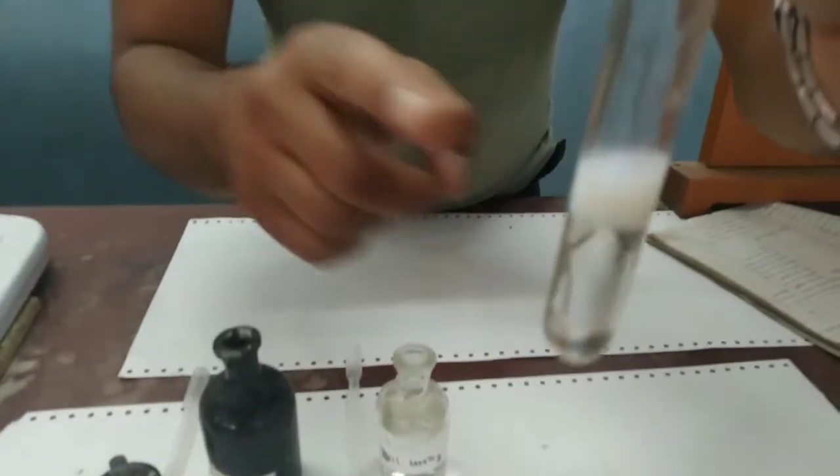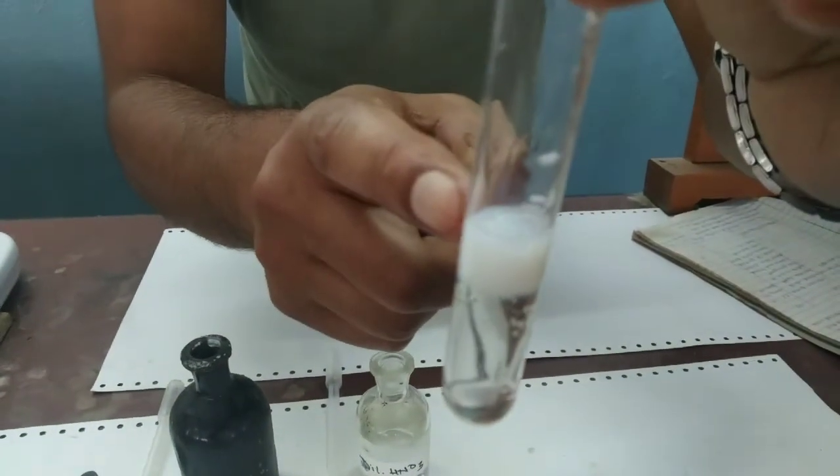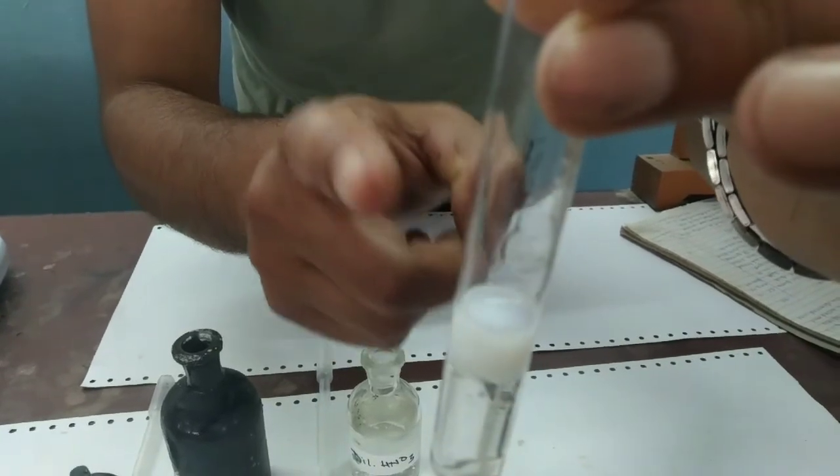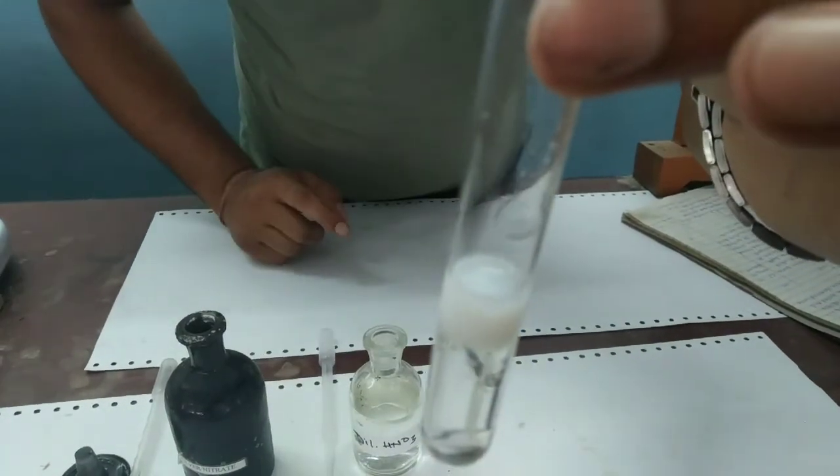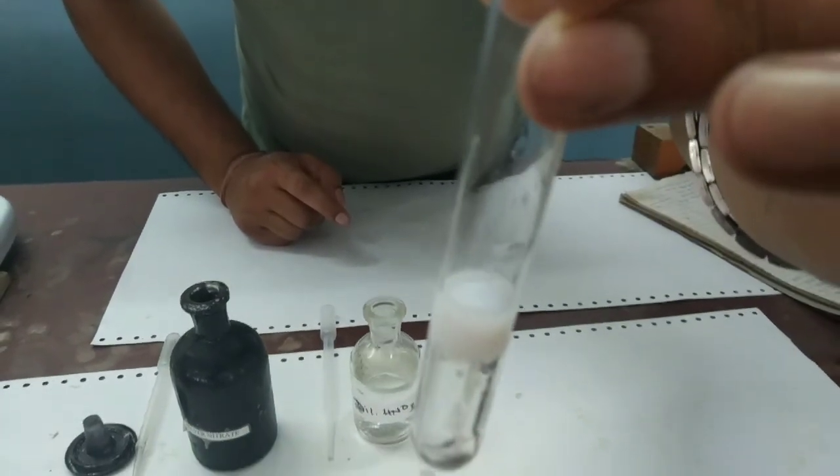As you can see the curdy white precipitate. This confirms the presence of chloride in the given sample. We have finished the test for chloride. This is confirmatory test for chloride.